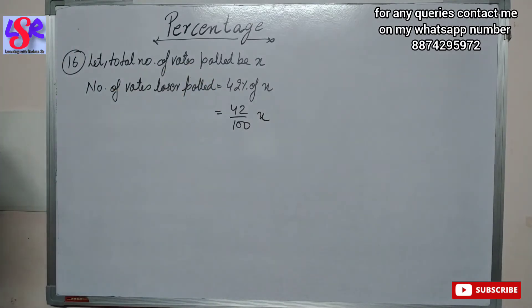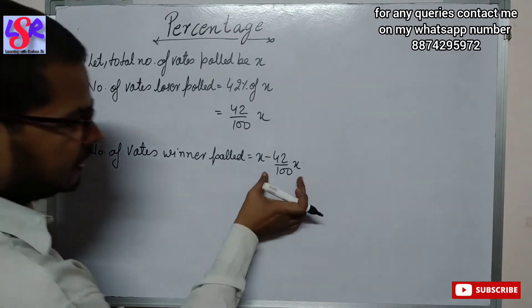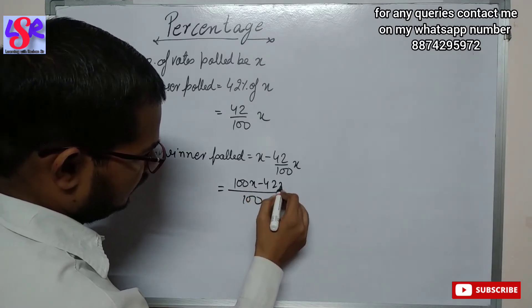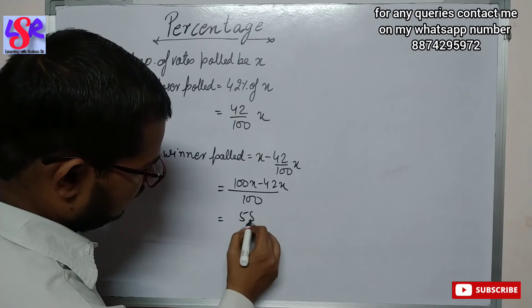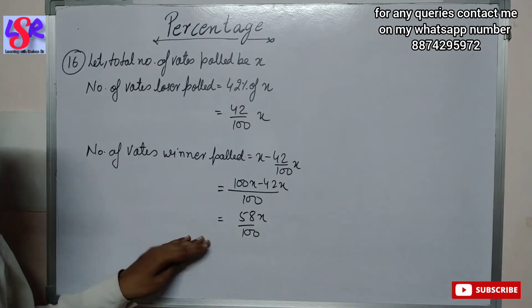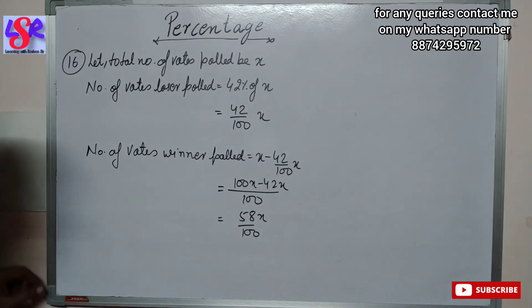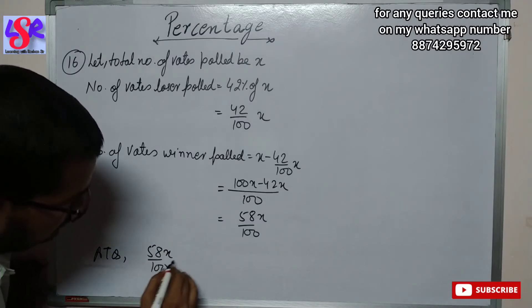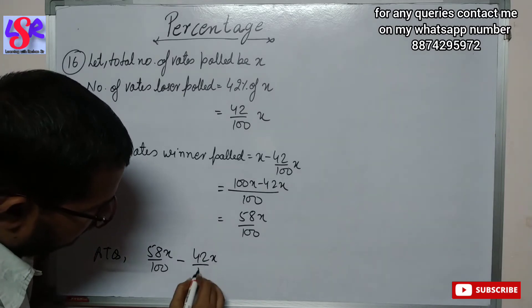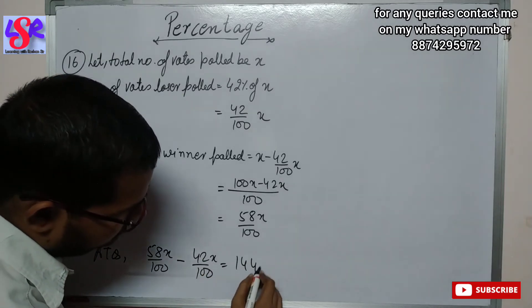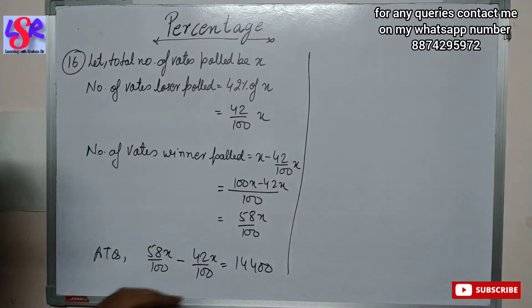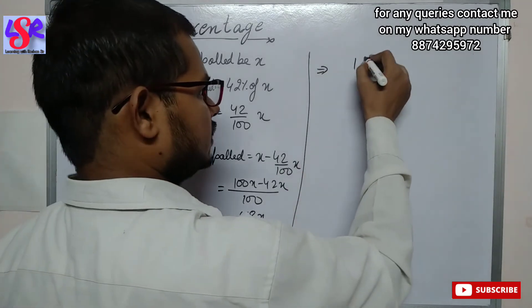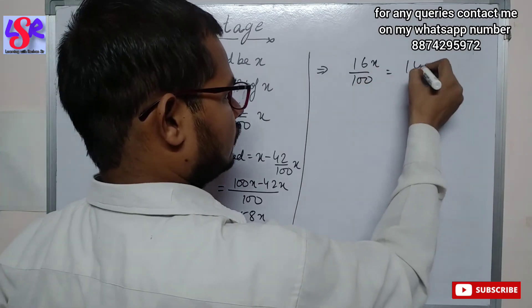Votes received by the winning candidate will be x minus 42% of x. Taking LCM as 100, this equals 100x minus 42x, that is 58x upon 100. It is also given that the difference between their votes is 14400. So according to the question, 58x upon 100 minus 42x upon 100 equals 14400. Solving: 58 minus 42 gives 16x upon 100 equals 14400.